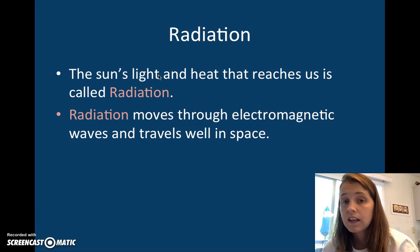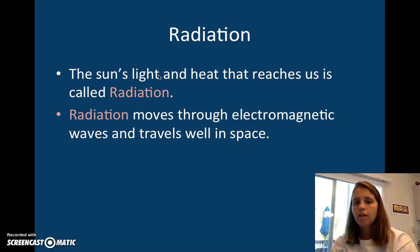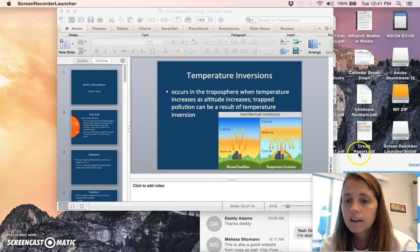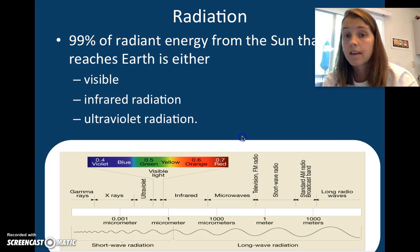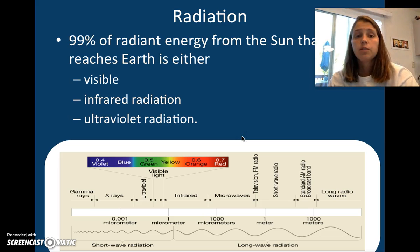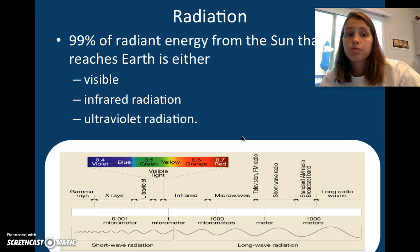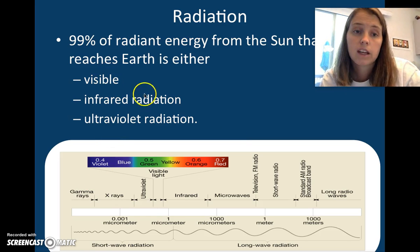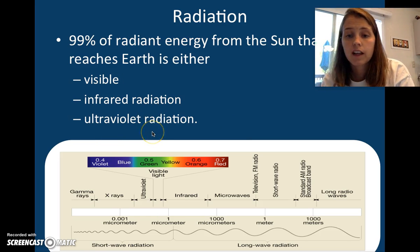Radiation. The Sun's light and heat that reaches us is called radiation. Radiation moves through electromagnetic waves and travels well in space. Basically, radiation is these waves that reach us and they can either be in the form of visible light, infrared radiation, or ultraviolet radiation.